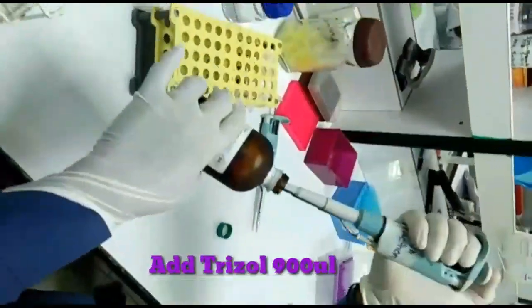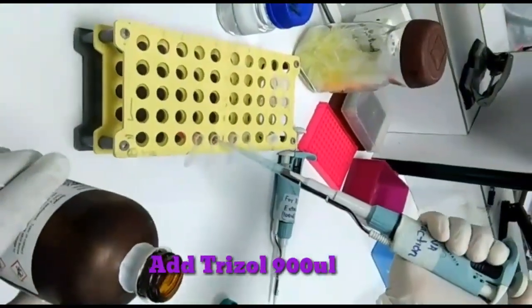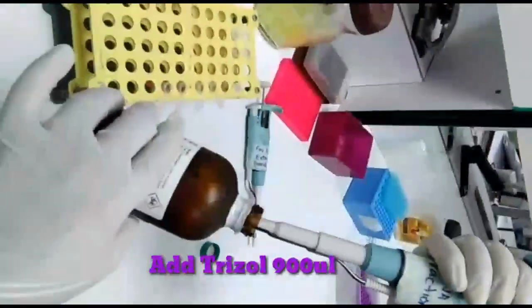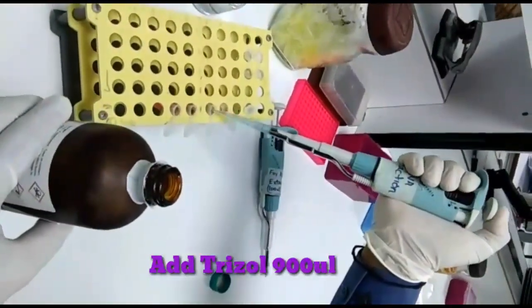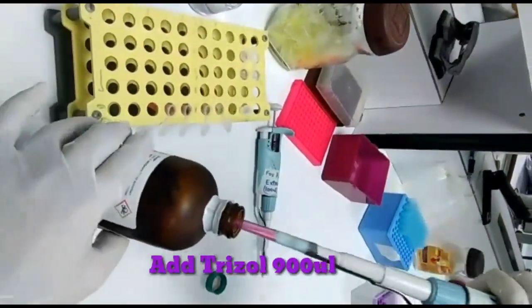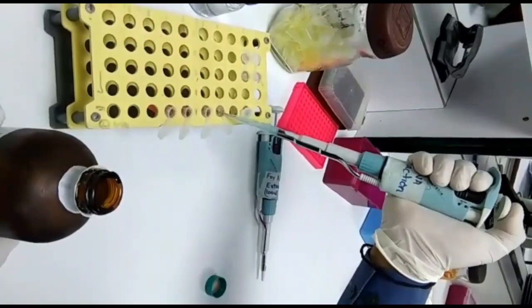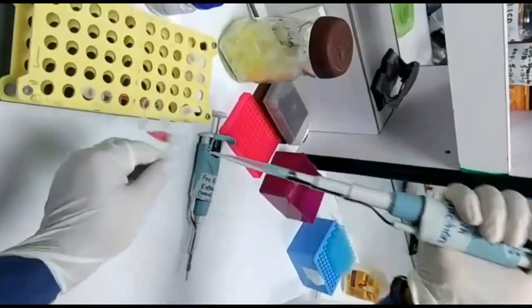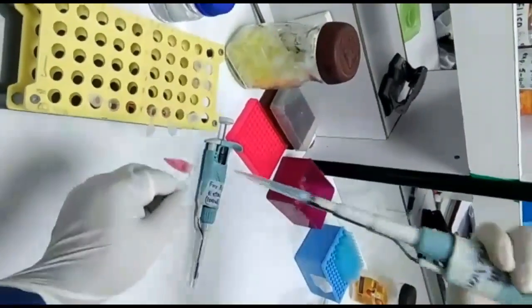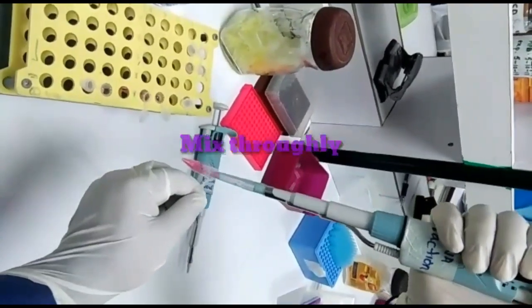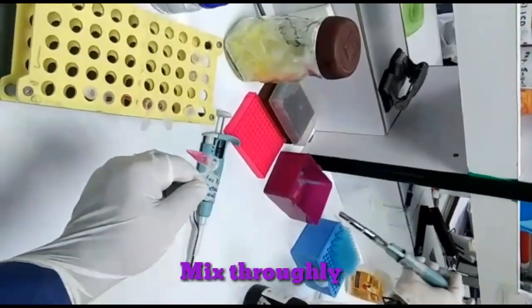Add 900 microliters of triazole in each sample. We are adding 900 microliters of triazole in each sample. Mix the triazole and sample thoroughly.